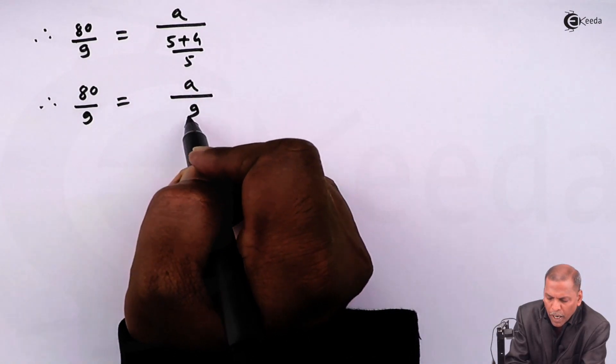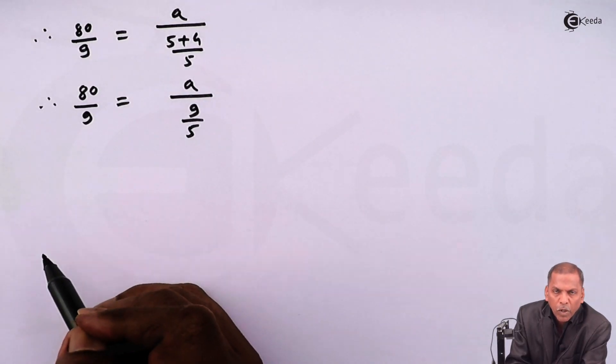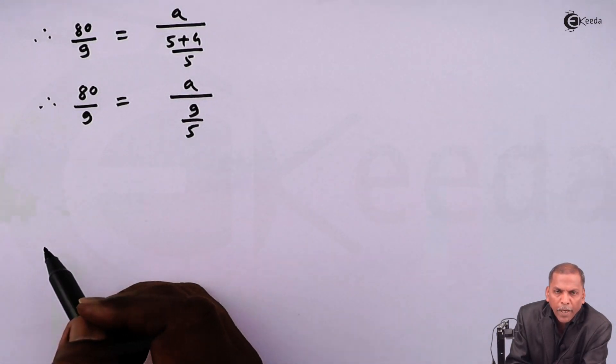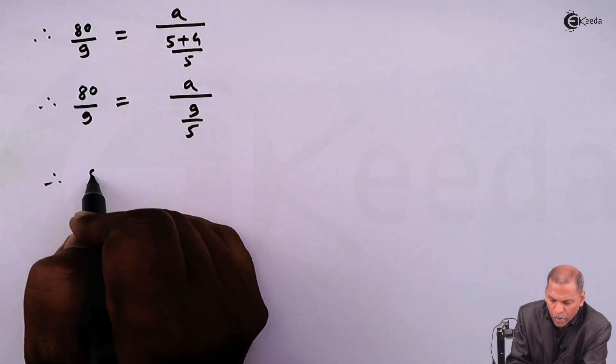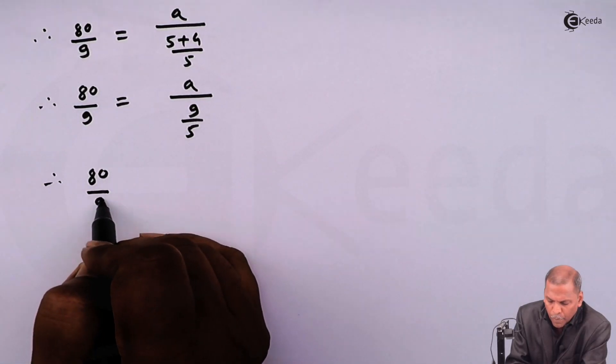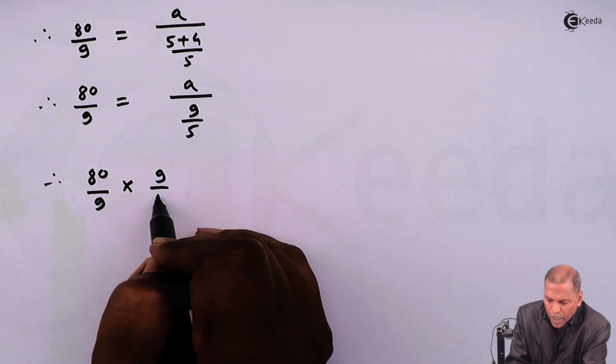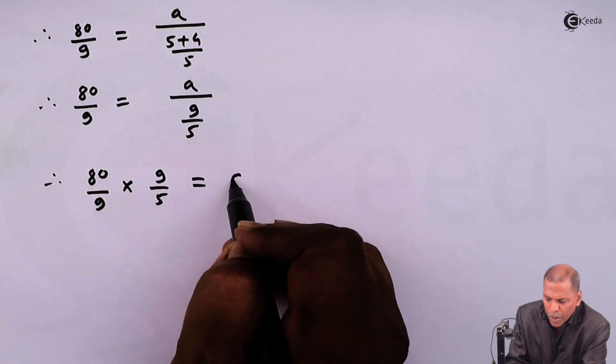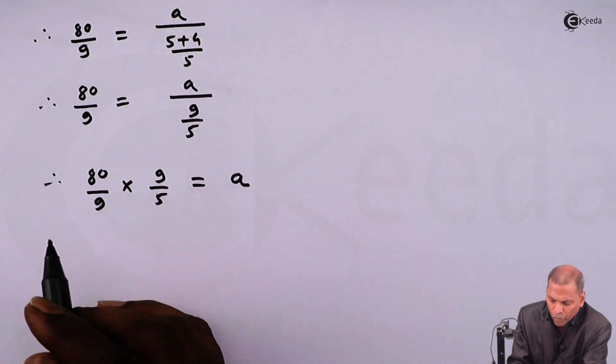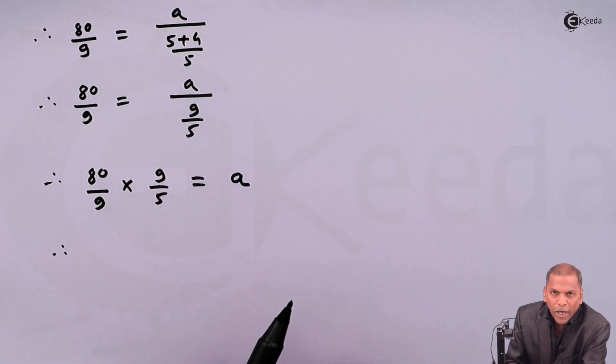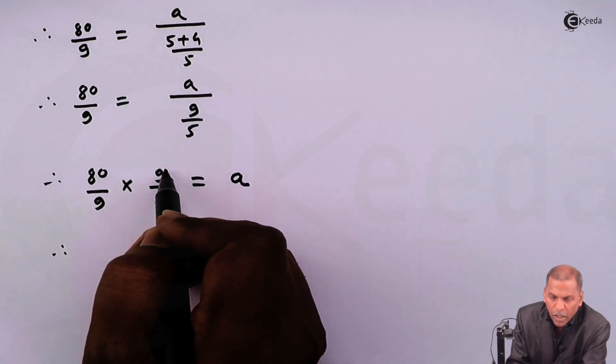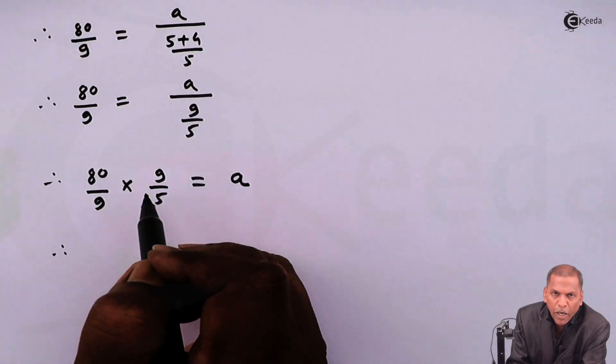On cross multiplying, we get 80 upon 9 into 9 upon 5 is equal to a. Then on cancellation, that 9 from numerator and denominator, cancel also 5 once.